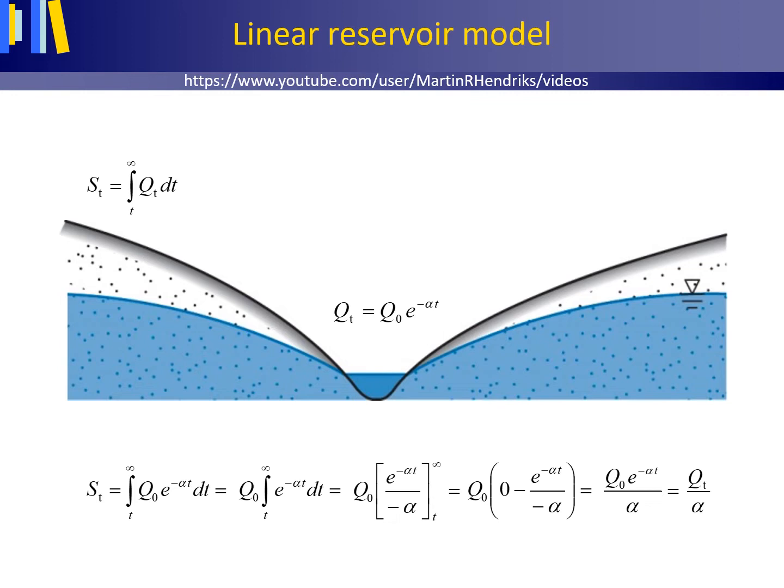As the groundwater storage depletes and the water table lowers, the discharge of the river will gradually decline.